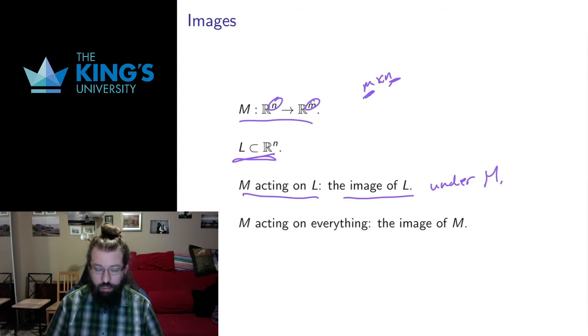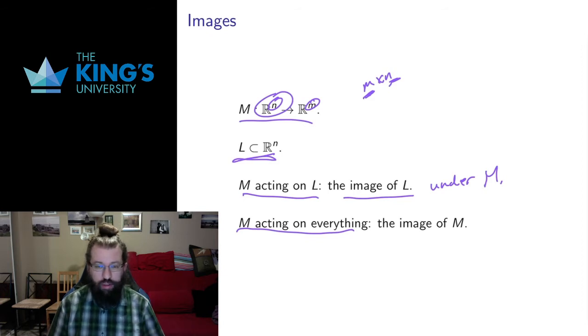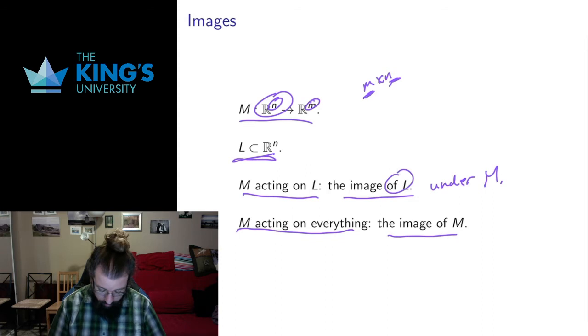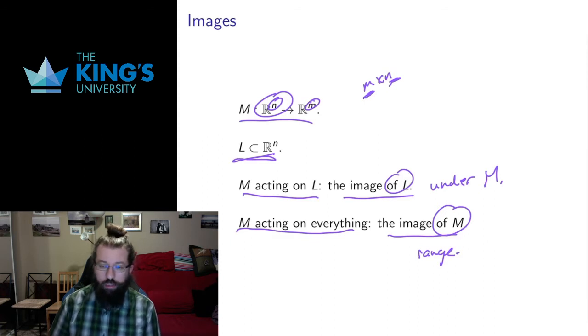There's one other use of the term image and this is a little bit confusing. But if I talk about M acting on everything, so what's the image of the entire space of all of Rn? I don't necessarily say the image of the entire space, we just talk about this as the image of the transformation. And that's a little bit annoying terminology because this is the image of a thing that we're transforming, this is the image of the transformation itself, but that is the standard terminology. So if I say what's the image of M, I mean where does M send the entire space? This is the same as asking for the range in the language of calculus, what are all the possible outputs. So the image of transformation is the set of all possible outputs of that transformation.